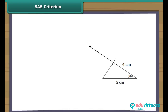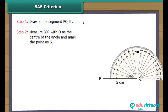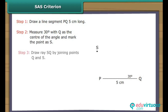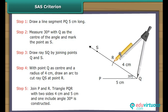SAS Criterion: Let us now draw a triangle whose two sides measure 4 cm and 5 cm and the included angle measures 30 degrees. Draw a line segment PQ as the base, mark the center of the angle as S, and draw ray SQ by joining points Q and S. With point Q as center and a radius of 4 cm, draw an arc to cut ray QS at point R. Join P and R. Triangle PQR with two sides 4 cm and 5 cm and one included angle of 30 degrees is constructed.